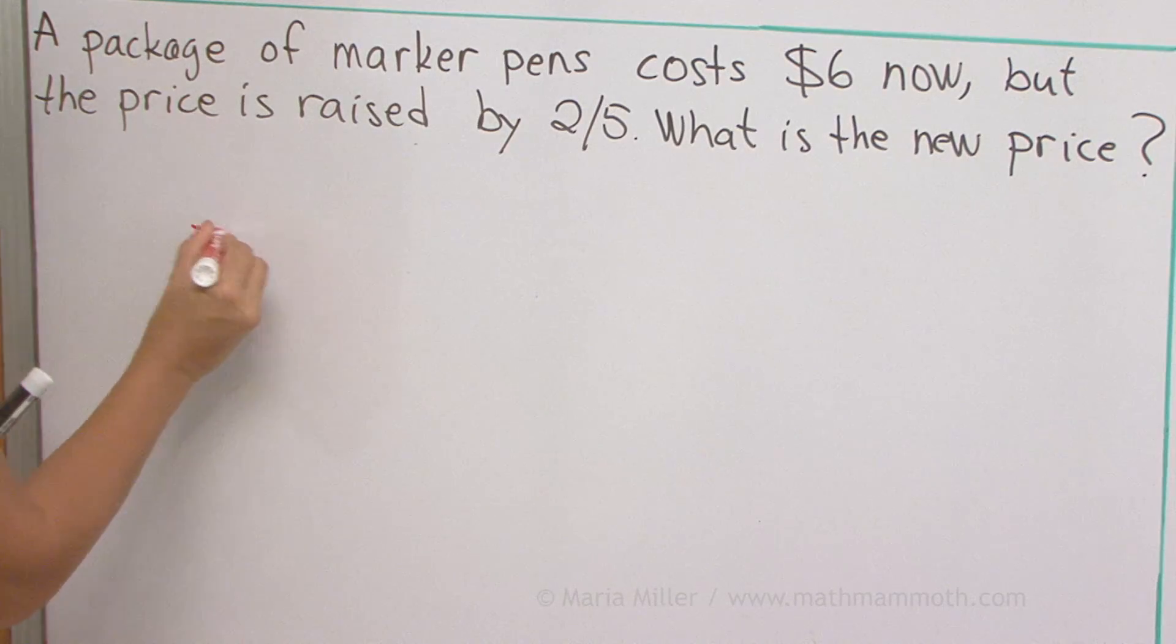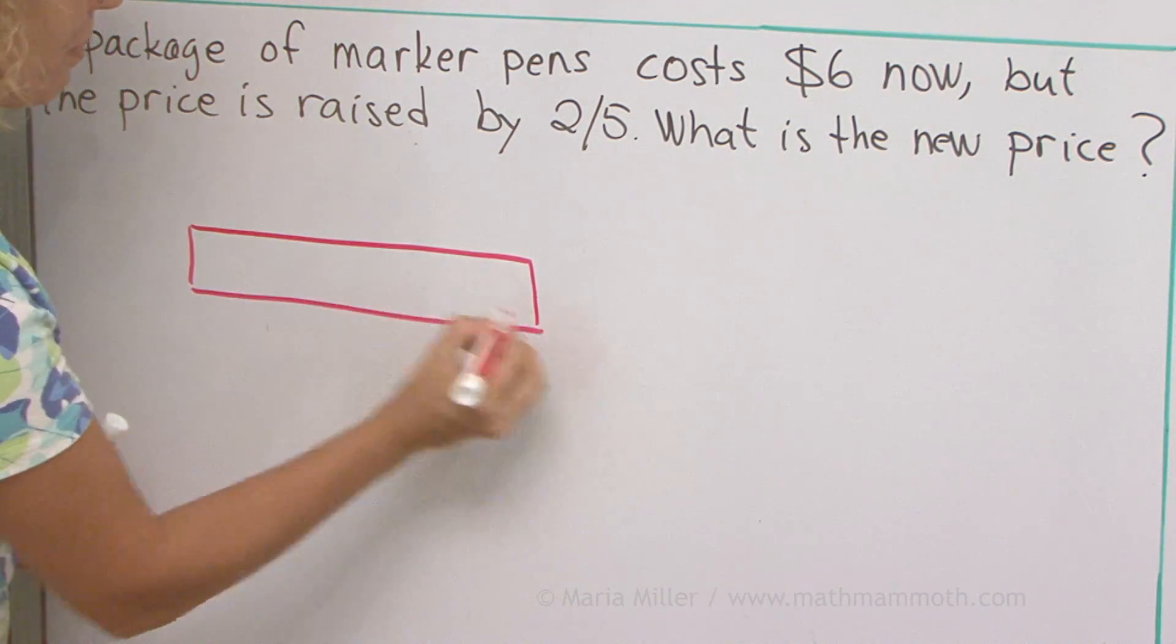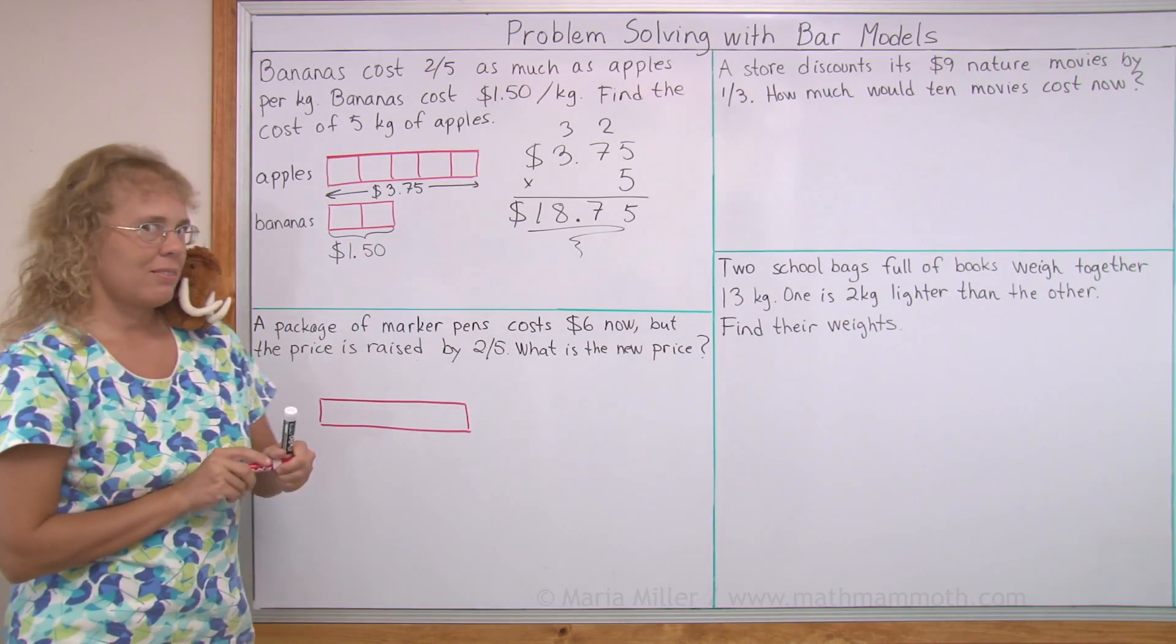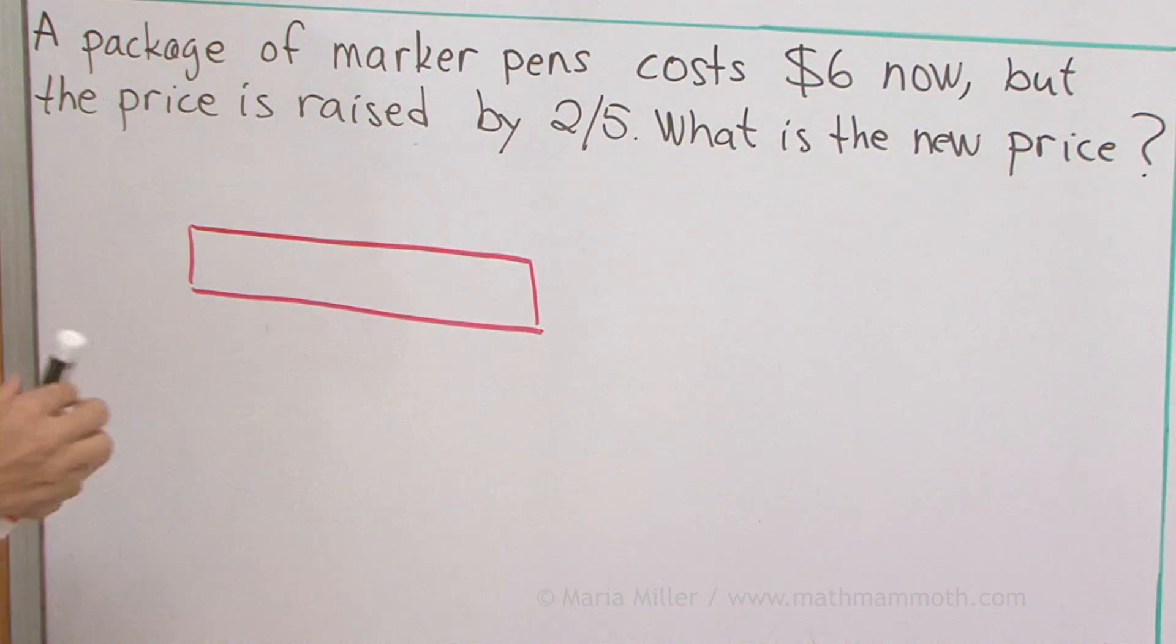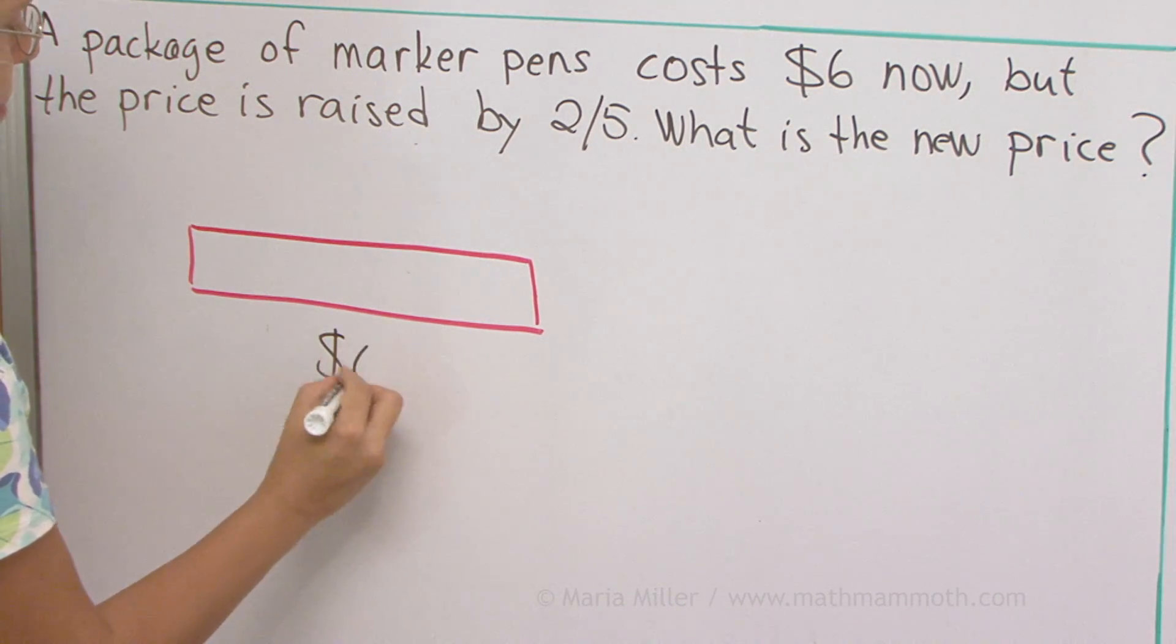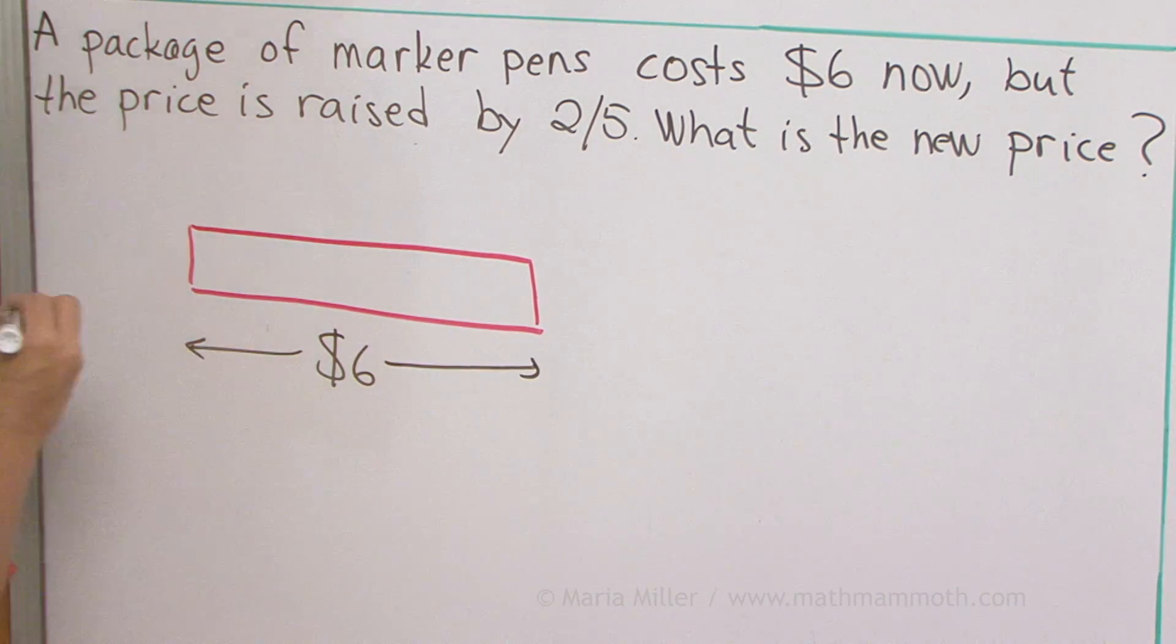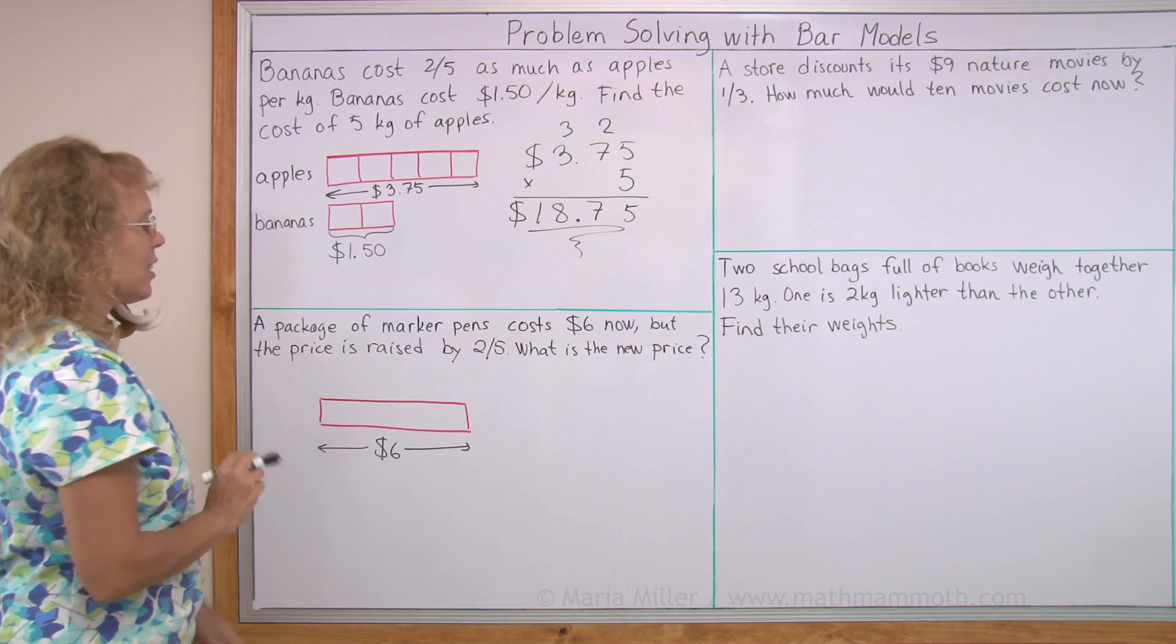So let's draw a bar model. For example, to represent the total cost here, as it is now, it is $6. Right now the package costs $6.